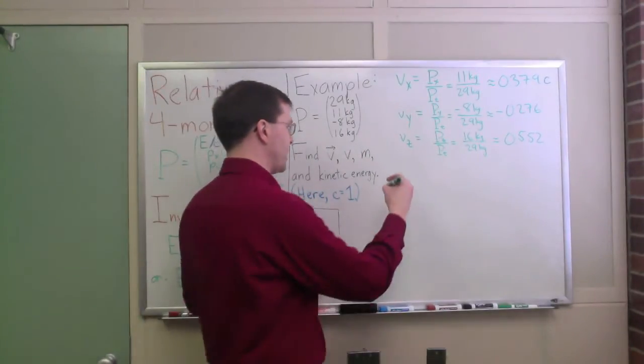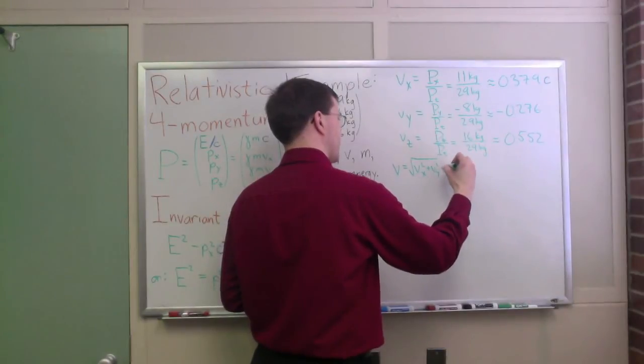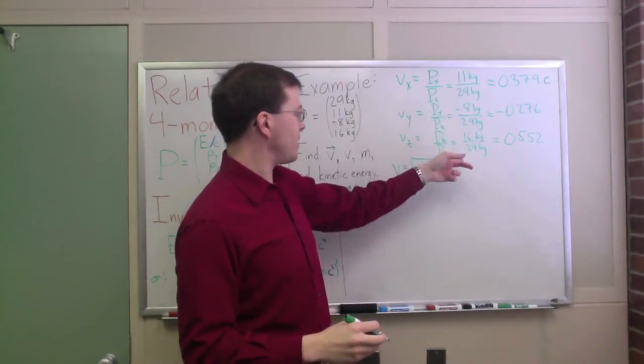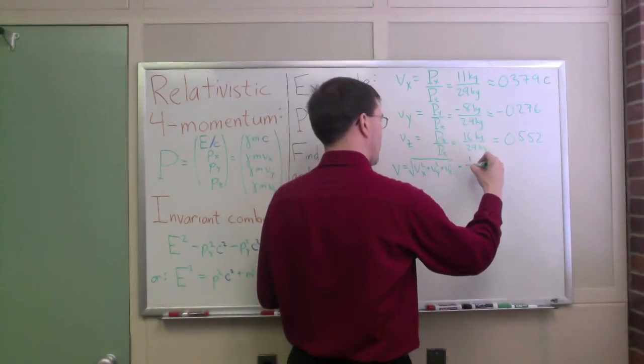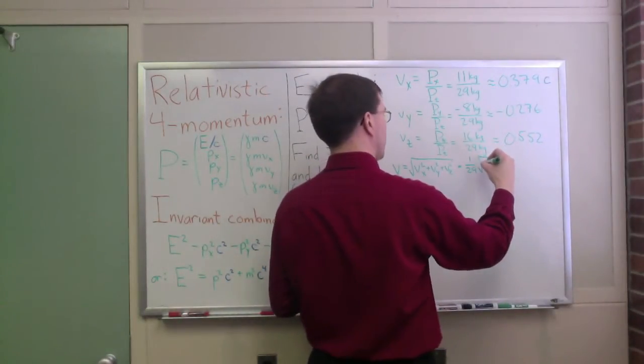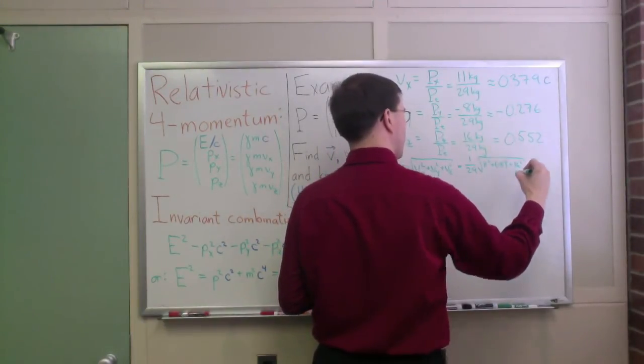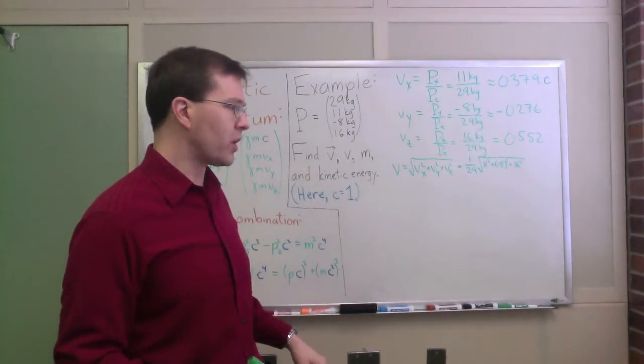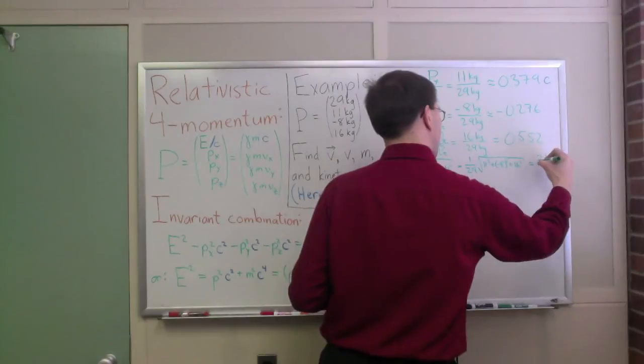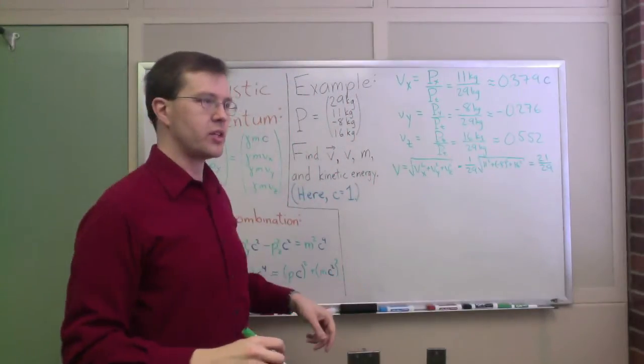So I've got my velocity vector. Those are components of a vector. That's great. If I want to find the speed, speed v is just the square root of vx squared plus vy squared plus vz squared. That square root, I can try to do it analytically. They're all the same denominator, and it's squared, squared. So, this is going to be 1/29th. I know the kilograms cancel along the way. 1/29th times the square root of 11 squared plus minus 8 squared plus 16 squared, right?